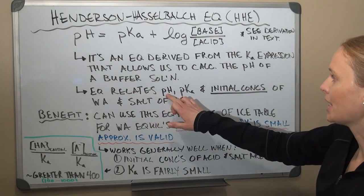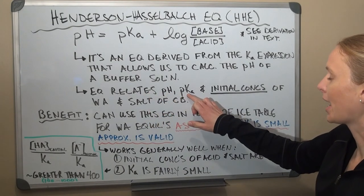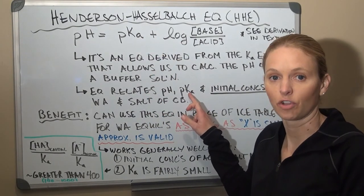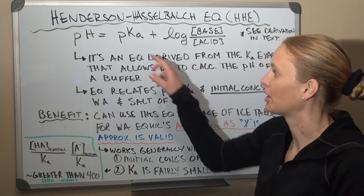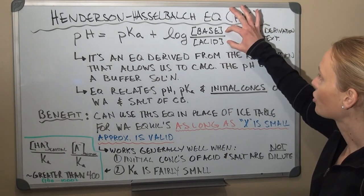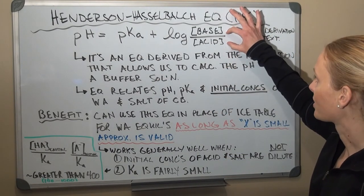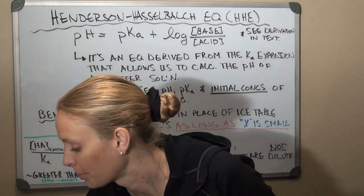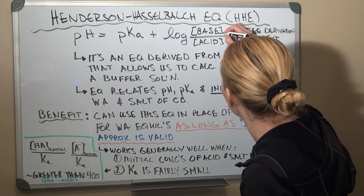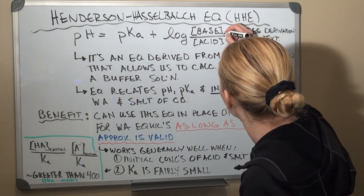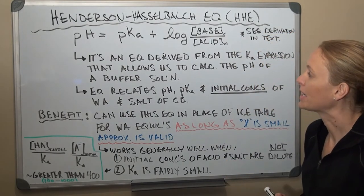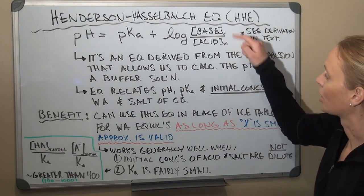The equation relates pH to pKa. We can take the negative log of Ka to get the pKa. The concentrations used are initial concentrations — specifically the initial concentrations of the weak acid and the conjugate base up in that log term.